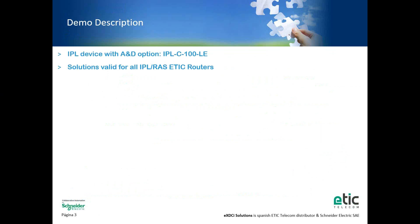For this demo we use an IPL with the alert and display option. In this case it is an IPLC100 LE with up to 4G connection. This solution is valid for all the IPL and RAS ETIC routers. We use the LAN and Ethernet connection, and we connect remotely by VPN using the L2TP connection for real-time data. In case we use the RAS device we use the M2Me solution, but in this case we use an IPL.